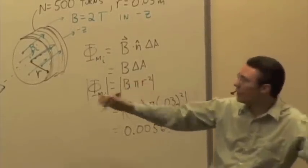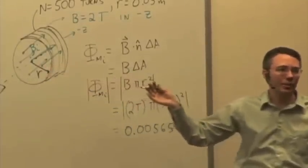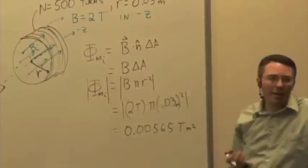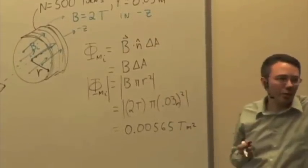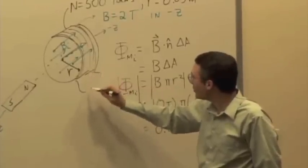If the bar magnet's not moving, then the magnetic field is constant and there's no change. So if there's no change in the magnetic field, we don't measure a current in the coil, we don't measure any potential difference or electric field across the ends of this coil.